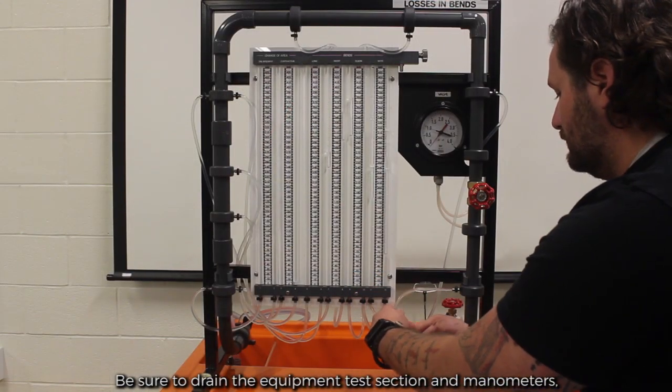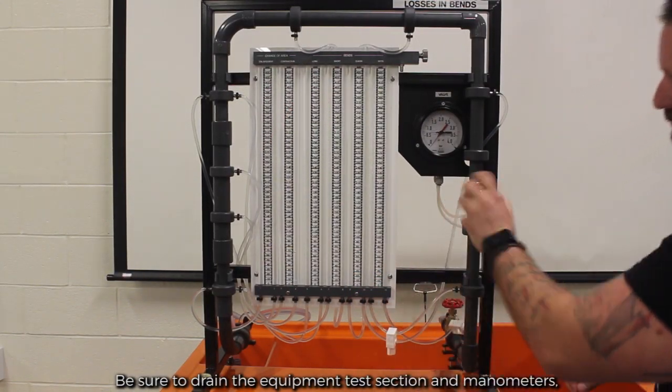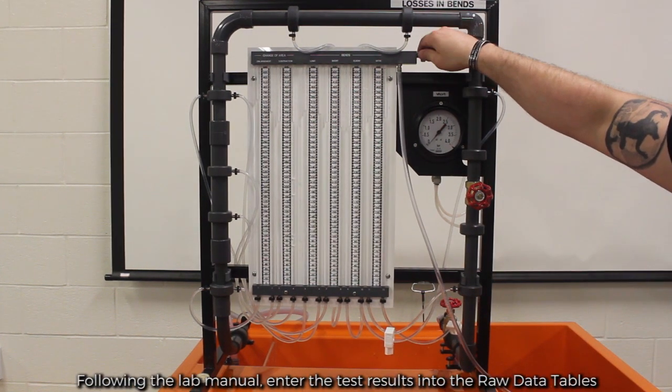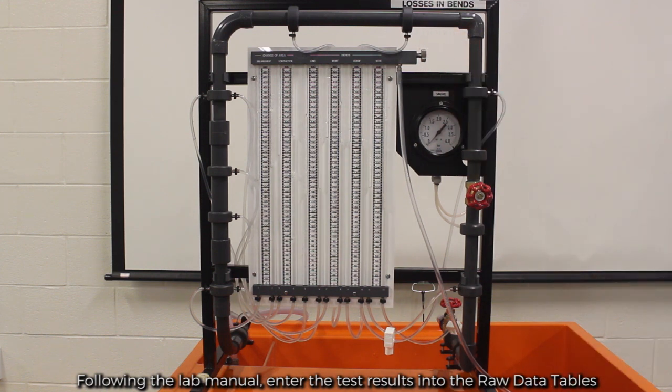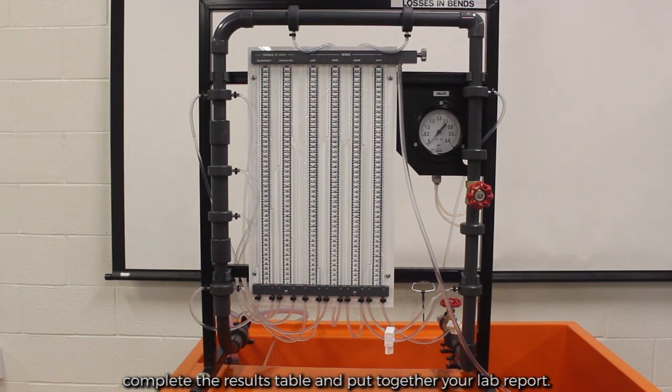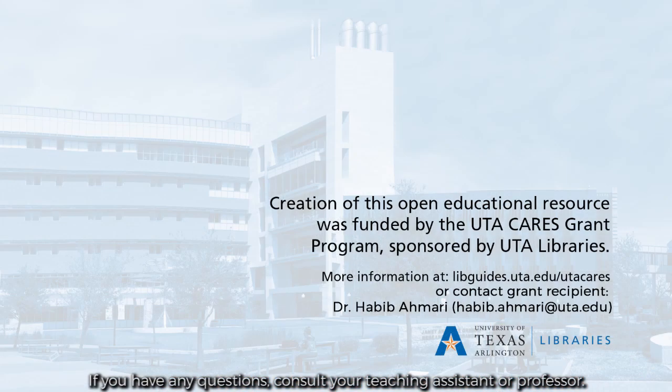Be sure to drain the equipment test section and manometers. Clean up your station and any water that may have spilled. Following the lab manual, enter the test results into the raw data tables, complete the results table, and put together your lab report. If you have any questions, consult your teaching assistant or professor.